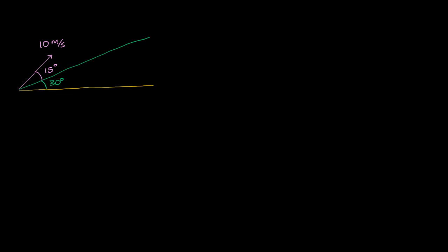The reason why this is more difficult than traditional projectile motion problems is that the projectile is going to be launched and eventually land at some point on the hill. We can't do the simple approach of figuring out how long it's in the air using its vertical velocity, because we don't know what the vertical displacement is going to be unless we know how far down the hill it lands.